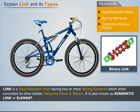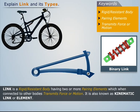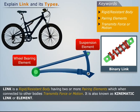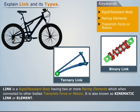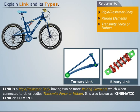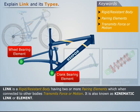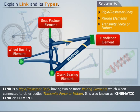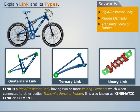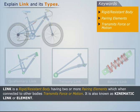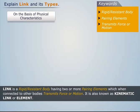The link formed by connecting the wheel bearing element, the suspension element, and the rear frame element is a ternary link. The link formed by connecting the wheel bearing element, crank bearing element, handlebar element, and the seat fastener element is a quaternary link.